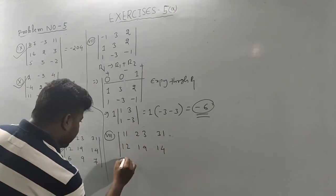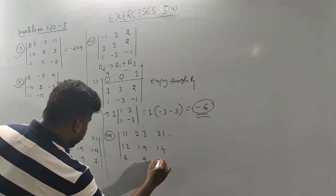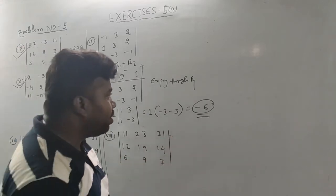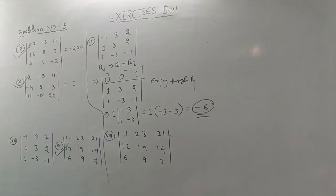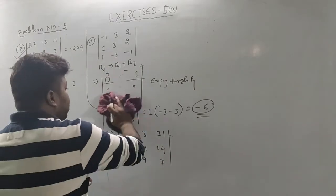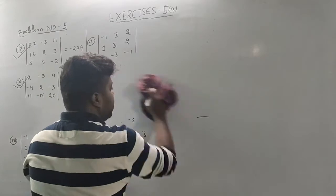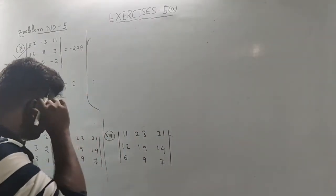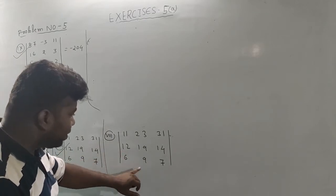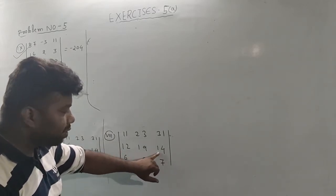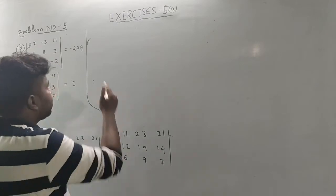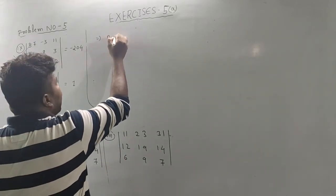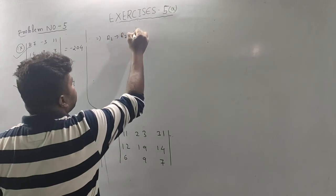Last question: 11, 23, 31, 12, 19, 14, 6, 9, 7. Using a property: it is 6 and 12, and it is 7 and 14, so it is almost double. So move property: use R2 takes to R2 minus 2 times R3.